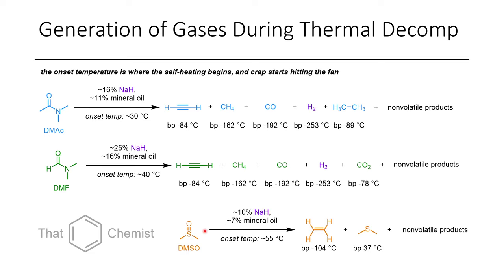Finally, in the case of DMSO, it only took 10% sodium hydride and 7% mineral oil, and the onset temperature was around 55°C. There were a couple of thermal events at lower temperatures, but this is when things became critical. The only two volatile products detected were ethylene and dimethyl sulfide, aside from any DMSO in the headspace. This really highlights that these exothermic reactions, even with small amounts of gas produced, can be a serious hazard.